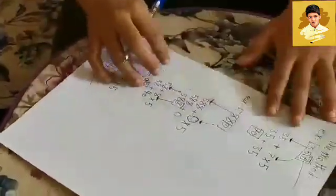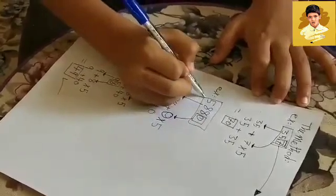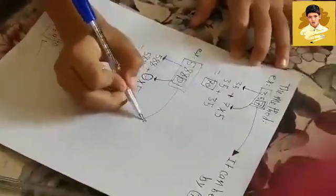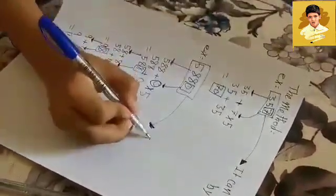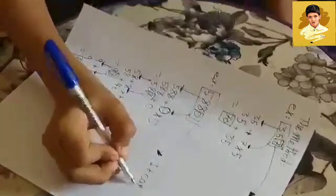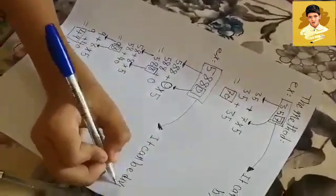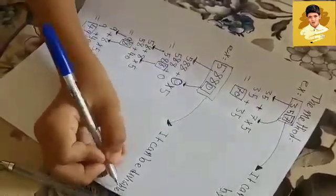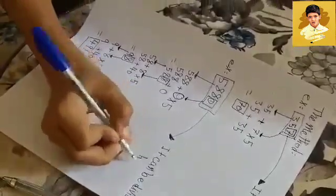So this number, 5,880, can be divisible by 7.